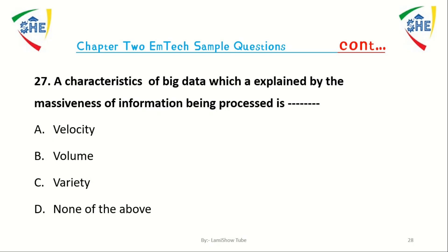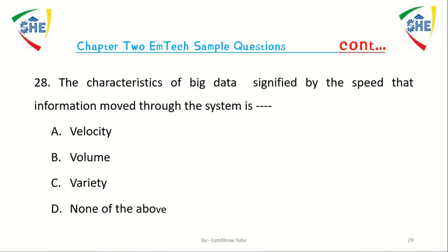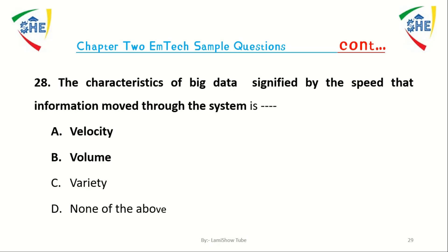Question number 27: A characteristic of big data explained by the massiveness of information being processed is called dash. A) Velocity, B) Volume, C) Variety, D) None of the above.